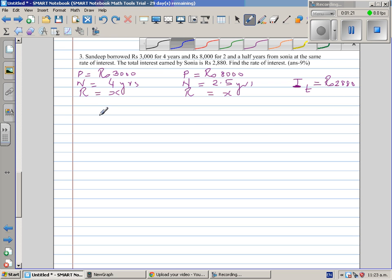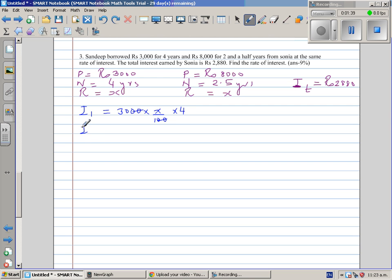Let me call this I1. Interest in the first situation would be your principle, 3,000 times x over 100 times 4. So 100 and 100 gets cancelled. Your I1, interest in the first situation, is 4 times 3 is 12, so this is 120x.